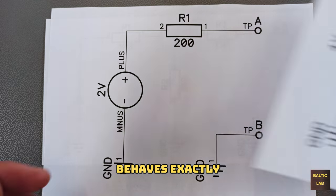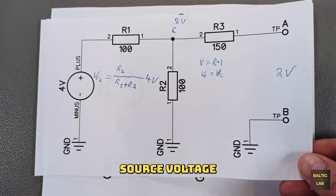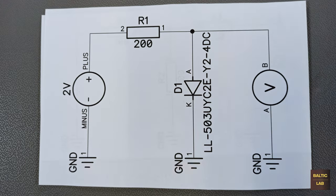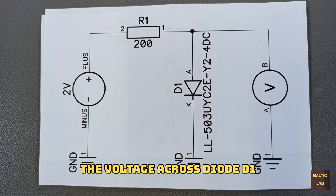This voltage source behaves exactly the same as the version with the 4 volt source voltage and the 3 resistors. Therefore the equivalent voltage source can now be used to determine the voltage across diode D1.